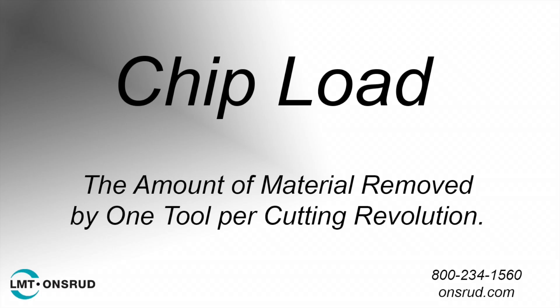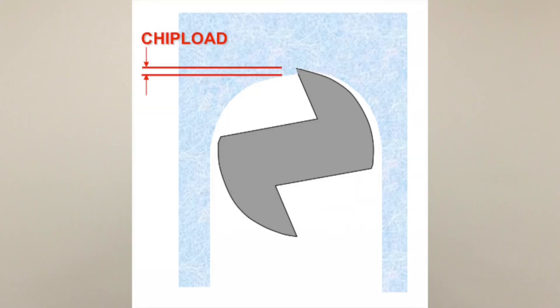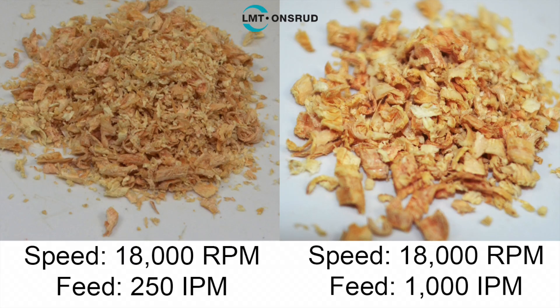The basic definition of a chip load is the amount of material that is being removed by the tool in one revolution. In other words, it's the actual thickness of a chip itself. Here we have some examples of wood chips in various sizes. As you can see, chips come in many different shapes and sizes, and the thickness is controlled by the spindle speed and feed rate of your machine. Maintaining the correct chip load is extremely important in achieving the best finish, performance, and tool life.